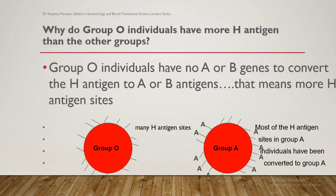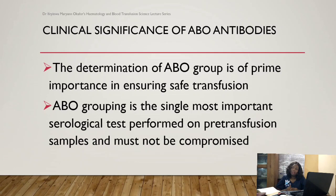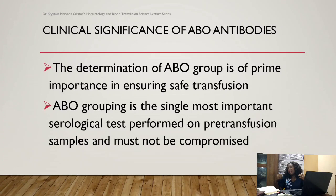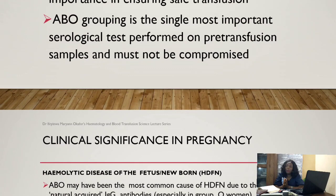What is the clinical significance of ABO antibodies? The ABO antibodies are very important in ensuring safe blood transfusion. They are naturally occurring, they are already present, they have high titer, high agglutinating properties, and they can react optimally at room temperature and at 37°C. Therefore, ABO compatibility must be considered for safe blood transfusion.